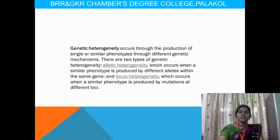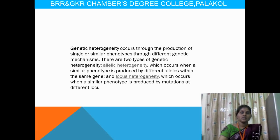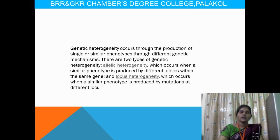Genetic heterogeneity occurs through the production of single or similar phenotypes through different genetic mechanisms. There are two different types: allelic heterogeneity and locus heterogeneity. Locus heterogeneity means that different places on the chromosome produce two different types of heterogeneity. Allelic heterogeneity is where similar phenotypes are produced by different alleles. These are called genetic heterogeneities.